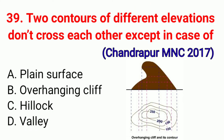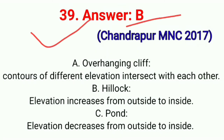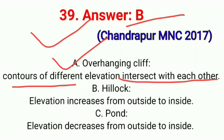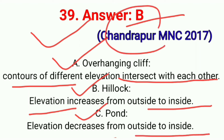Question No. 39. Two contours of different elevations don't cross each other, except in case of. This question is asked in exam Chandrapur MNC 2017. Correct option B: Overhanging cliff. Contours of different elevations intersect with each other in an overhanging cliff. Second, hillock — elevation increases from outside to inside. Third, pond — elevation decreases from outside to inside. Correct option B.